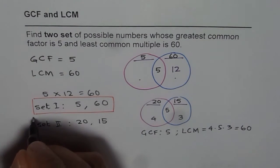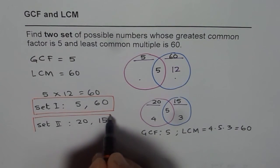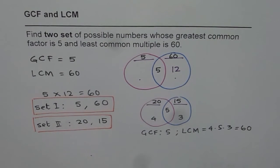So that is our second set. I hope with this you understand how to find different sets of numbers when we are given least common multiple and greatest common factor.